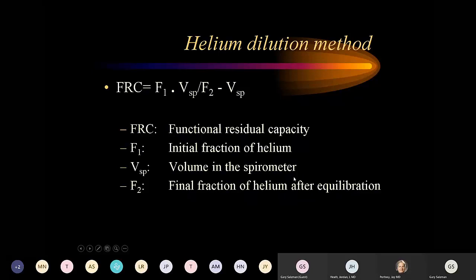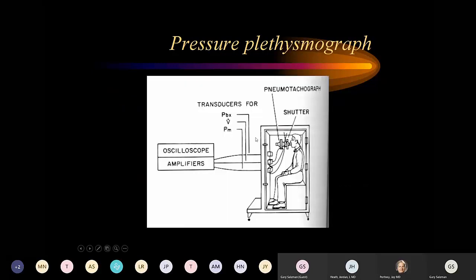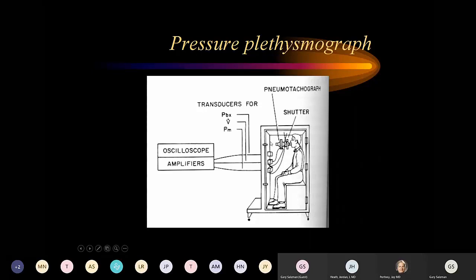Body plethysmography is the preferred method for measuring lung volumes. The patient enters a sealed body box. We know the volume and pressure in the box, and we measure pressure in the lungs through a pneumotachograph. From these values, we calculate the volume in the lungs — giving the most accurate total lung volume measurement.